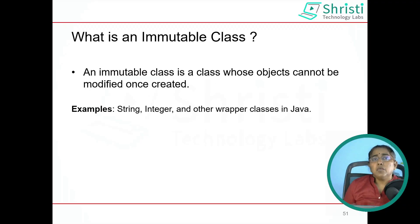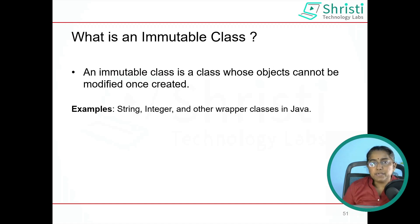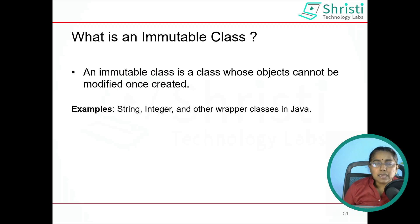Let us get started. What is an immutable class? An immutable class is one where once the objects are created, they cannot be modified. Few examples are String, Integer, and all the wrapper classes from the java.lang package.